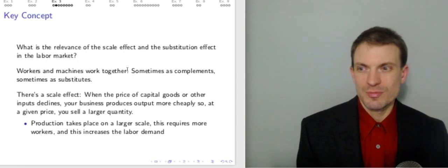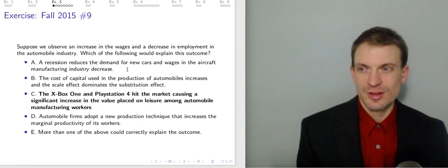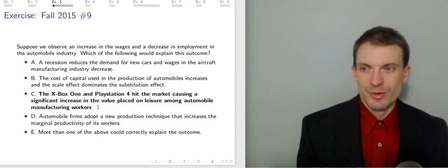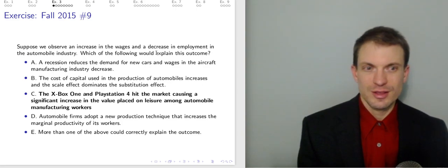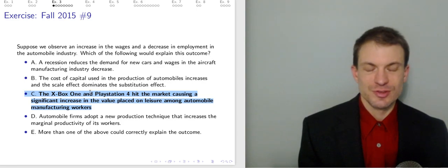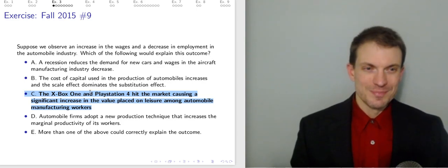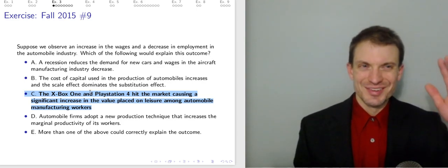So back to the question: the option consistent with an increase in price and a decrease in quantity is a leftward shift to supply. Option C is the one that gives us a leftward shift to the labor supply.